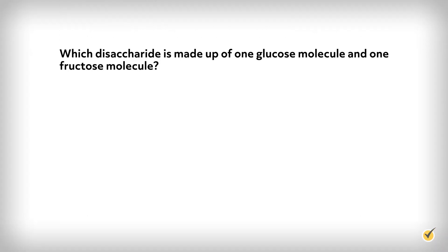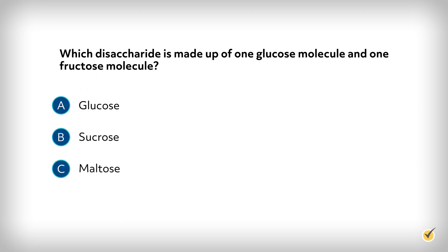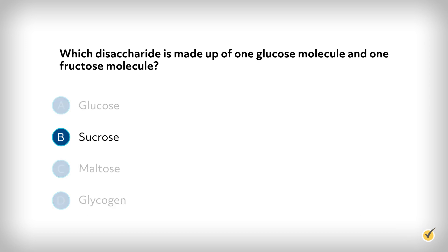Now that we've covered everything, let's look at a couple of review questions. Which disaccharide is made up of one glucose molecule and one fructose molecule? Is it A, glucose; B, sucrose; C, maltose; or D, glycogen? The correct answer is B. Glucose is a monosaccharide, sucrose is made up of glucose and fructose, maltose is made up of two glucose molecules, and glycogen is a polysaccharide.